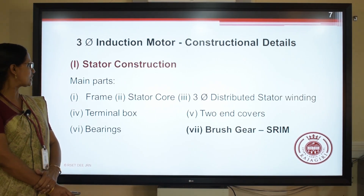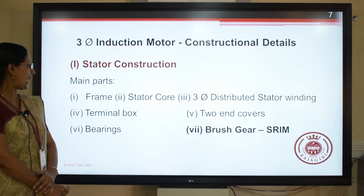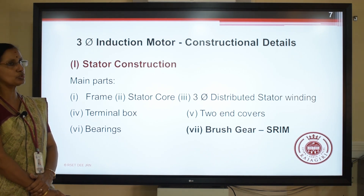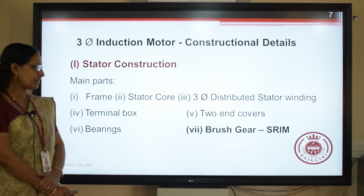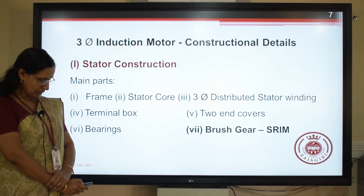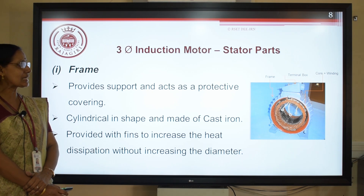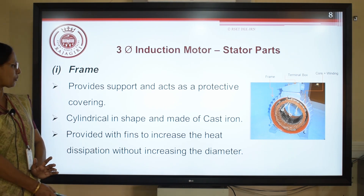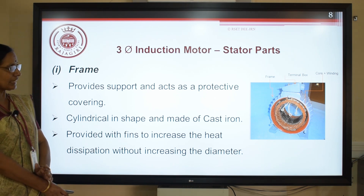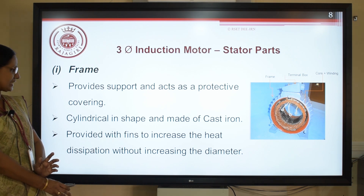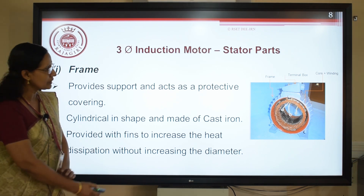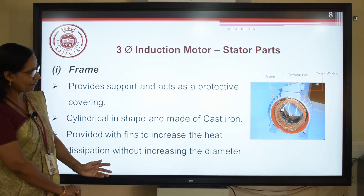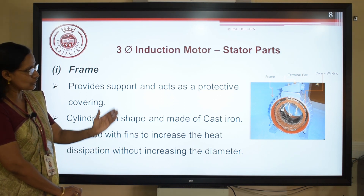Moving on to stator construction. The main parts are: a frame, followed by the stator core, three-phase stator winding, a terminal box, two end covers, bearings, as well as brush gear which is applicable only for slip ring induction motor. The frame acts as an outer covering — it provides support and acts as a protective cover. It is cylindrical in shape. Fins are provided to increase heat dissipation without increasing the diameter. You can also see the terminal box. This represents the stator with the frame, stator core, three-phase winding, as well as the terminal box.